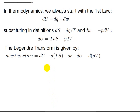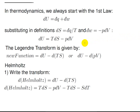To do the Legendre transform the same way, we know that we will have some new function which is our old function du minus the derivative of a conjugate pair. Here, ts is one conjugate pair, or we could use the other conjugate pair, pv. For Helmholtz free energy, we're going to use the ts conjugate pair — you'll have to remember that or find a way of remembering it if you want to associate it with Helmholtz.